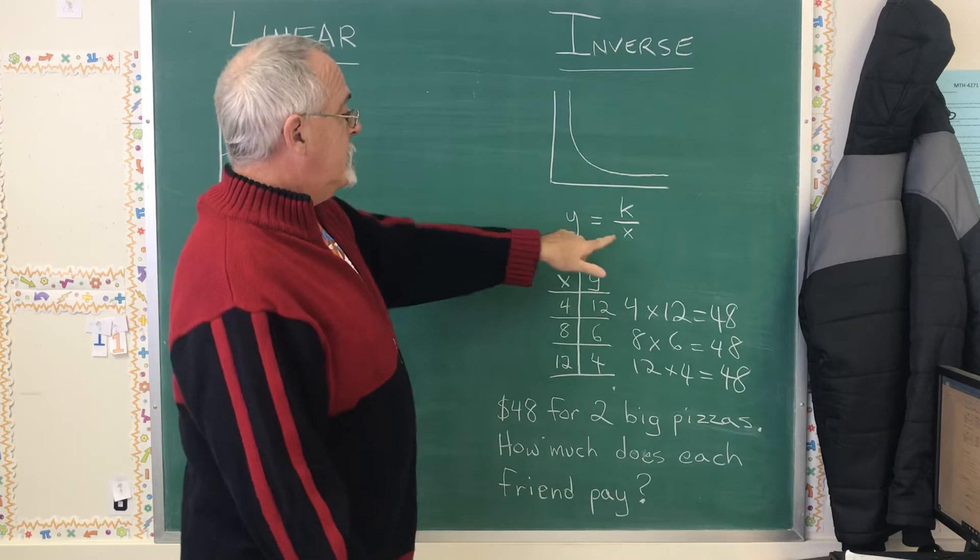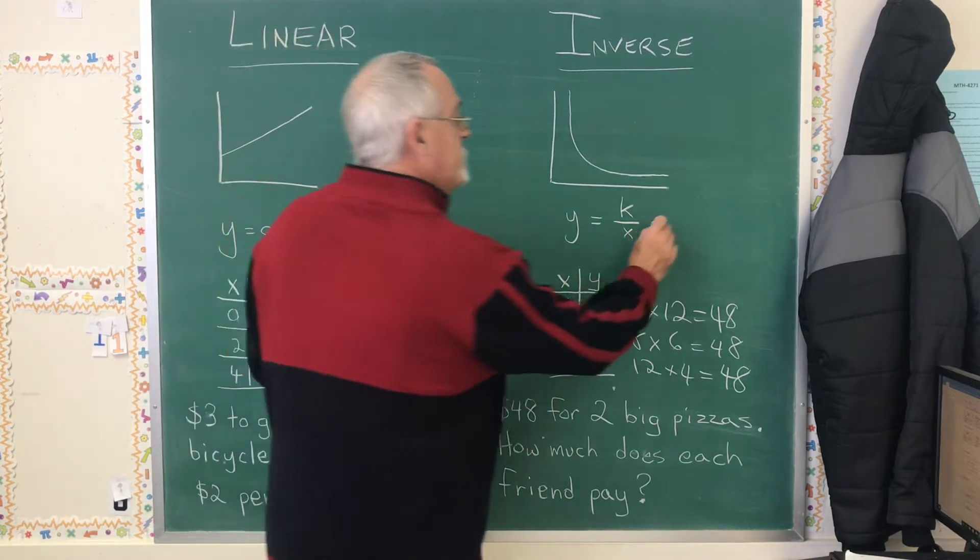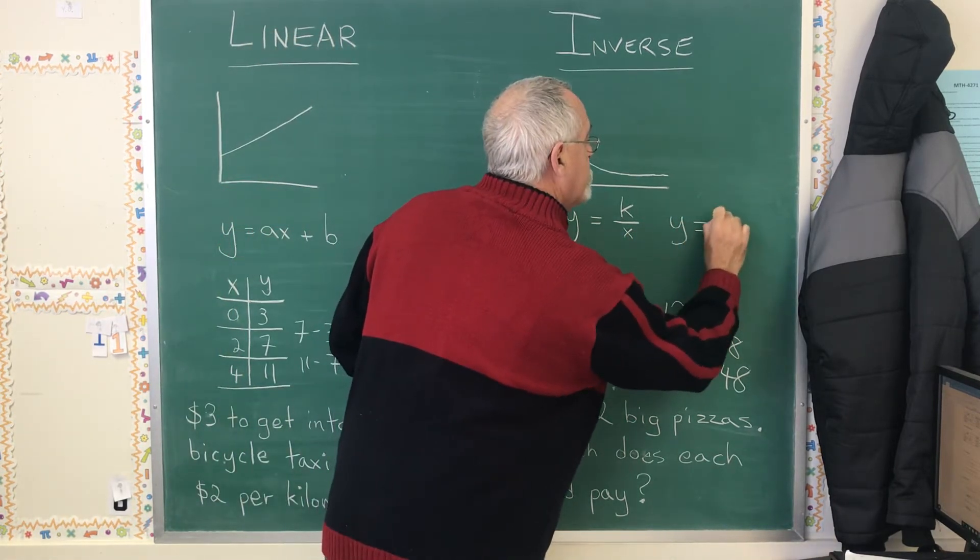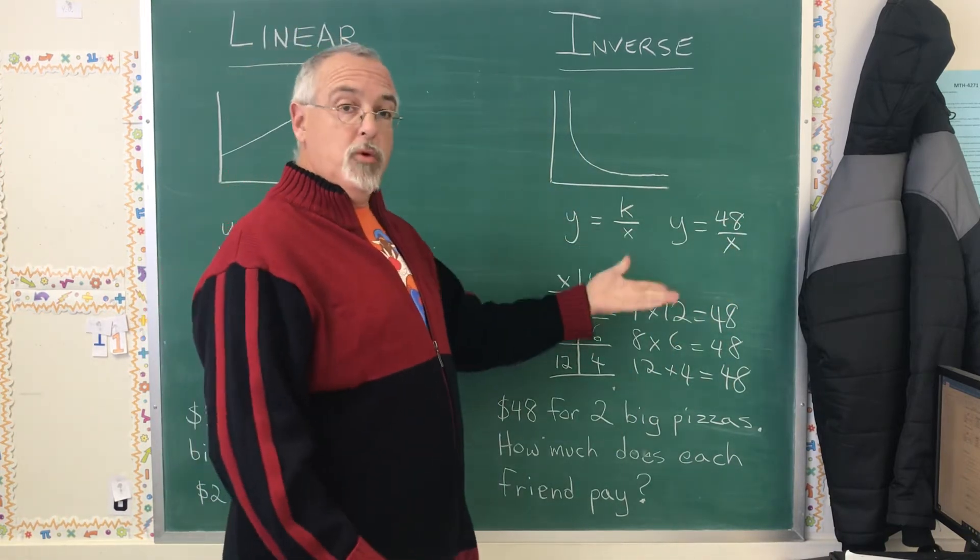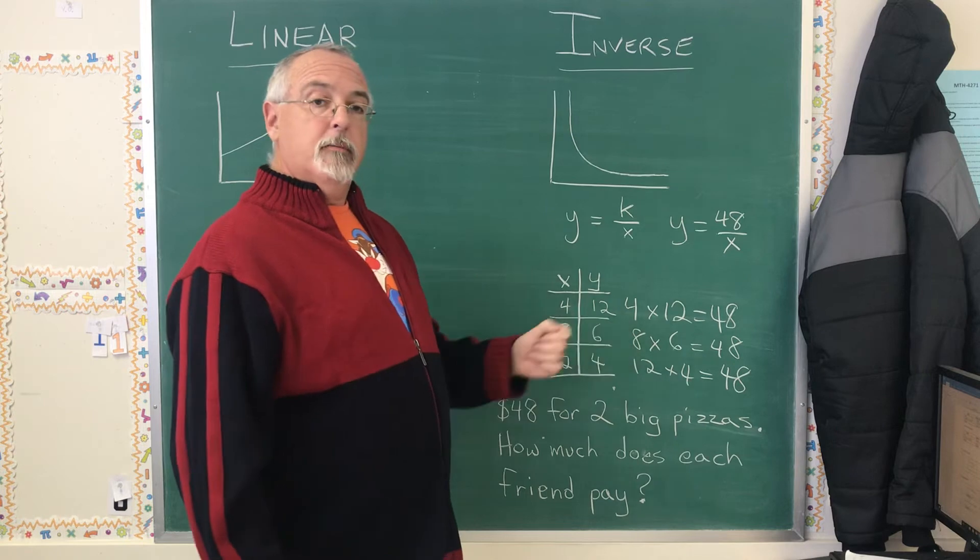I keep getting the same answer from the product. The constant product. The constant product is 48. And that's really useful because in this type of equation, that means my equation is y equals 48 over x. It's that fast to find the equation or the rule when you've found your constant product.